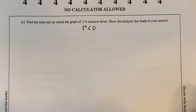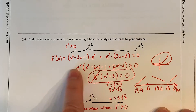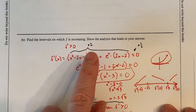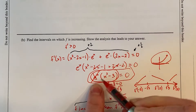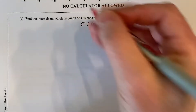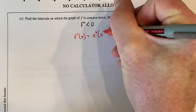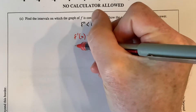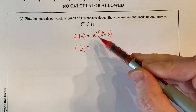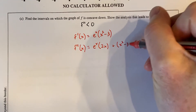Rather than differentiating the unsimplified first derivative with two product rules, I'll work from the simplified form: e to the x times (x squared minus 3). The second derivative is the product rule of that: first D second plus second D first. AP gives you two points for finding the second derivative correctly, plus a half point for setting it equal to zero. Make sure you label what you're doing.